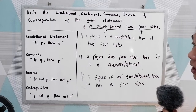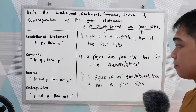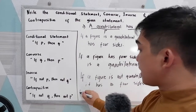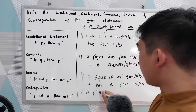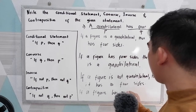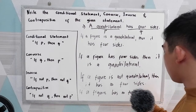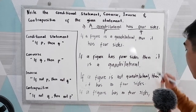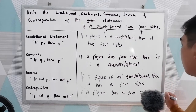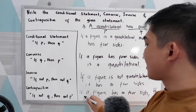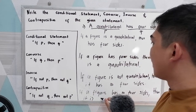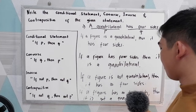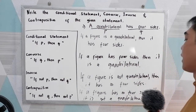And the contrapositive — if not q then not p: 'If a figure has no four sides, then it is not a quadrilateral.'